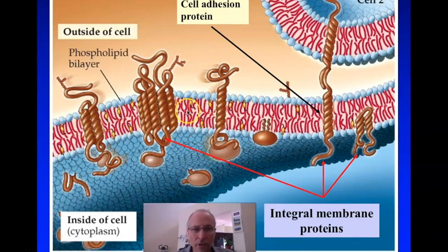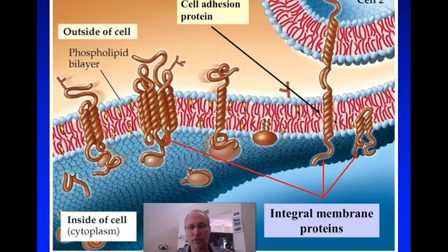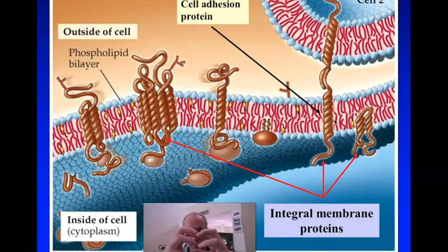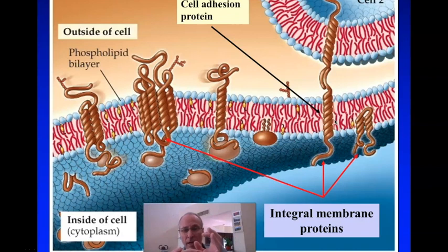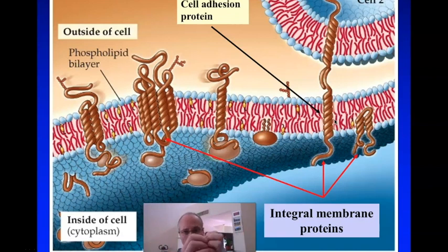Because these are all soap molecules, what you're looking at really is a soap bubble with a bunch of proteins embedded in it — and that's precisely what the cell membrane acts like. Just like any soap bubble, you take two, put them together, and they'll merge into one giant soap bubble. A soap bubble inside a bigger soap bubble will touch the outside and get incorporated.